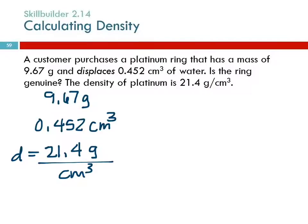Read all the words — it might be confusing — but just pull the numbers out. We have 9.67 grams and 0.452 cubic centimeters, and the density of platinum is 21.4 grams per cubic centimeter. The problem isn't explicitly telling us what to calculate. We have to think: we need to calculate the density of the ring and compare it to the density of platinum. If they're the same, the ring must be platinum. If different, we probably got ripped off.